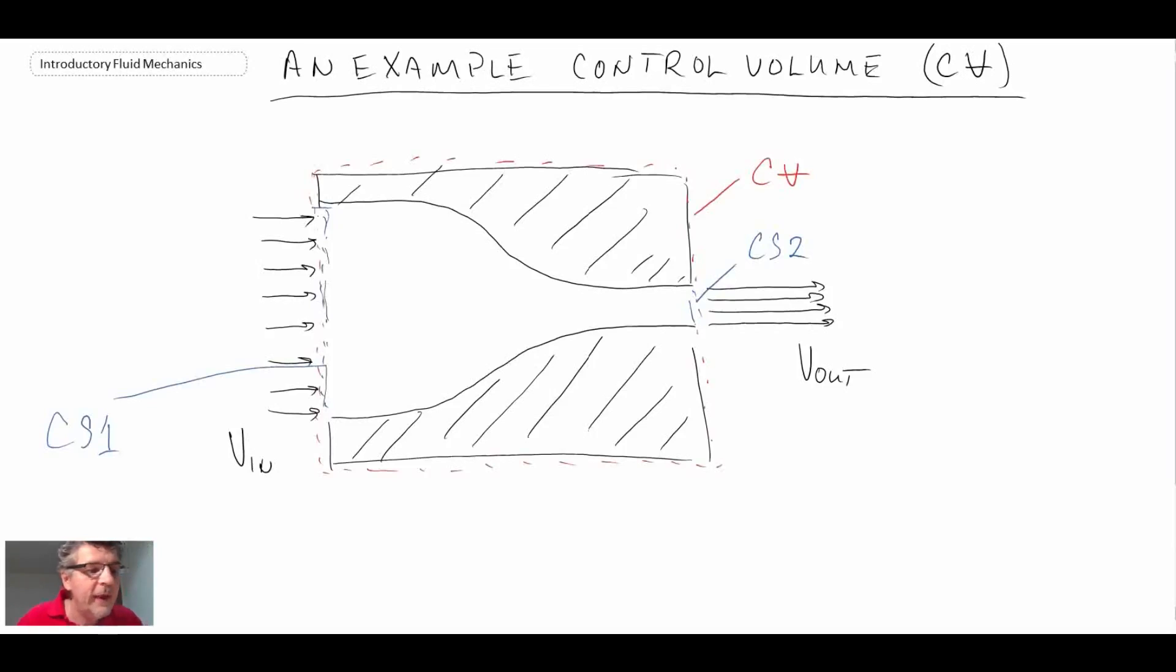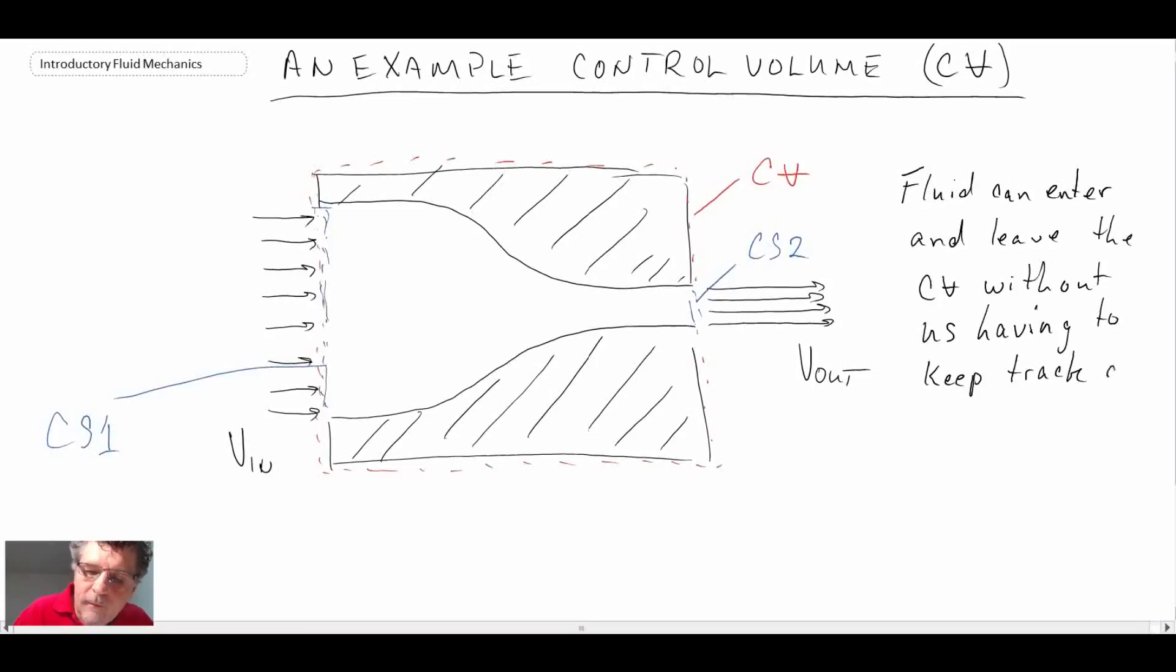So with a control volume, fluid can cross the boundaries, but our governing equations are for fixed chunks of mass. And consequently, we need a way to be able to relate that. And so the idea with the control volume is that you only are worried about the boundaries, the inlets, and the exits. And we don't have to keep track of all of the particles of fluid going through it. However, this does increase complexity because, as I mentioned, our governing equations are for fixed mass.